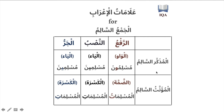In summary: the Jama' Mudhakkar Salim and the Jama' Mu'annath Al-Salim are similar in that for Nasb and Jarr they each take the same sign in their respective category. For the masculine plural, it is two Ya's; for the feminine plural, it is two Kasras. That is the A'lamat Al-I'rab for the two types of sound plurals in Arabic.